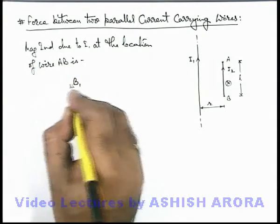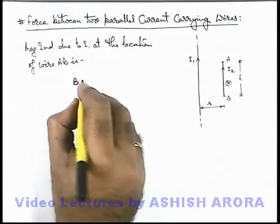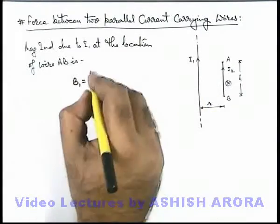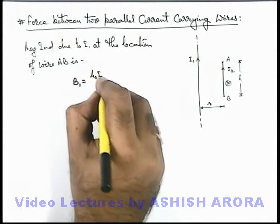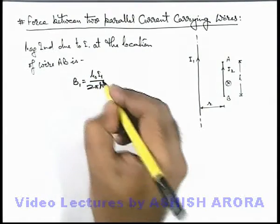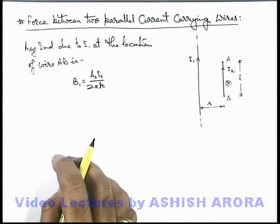This is the magnetic induction due to current i₁, which can be given by the result of a straight wire at distance r, which can be written as μ₀i₁/(2πr). This we have already studied by using Biot-Savart's law in the previous topic.